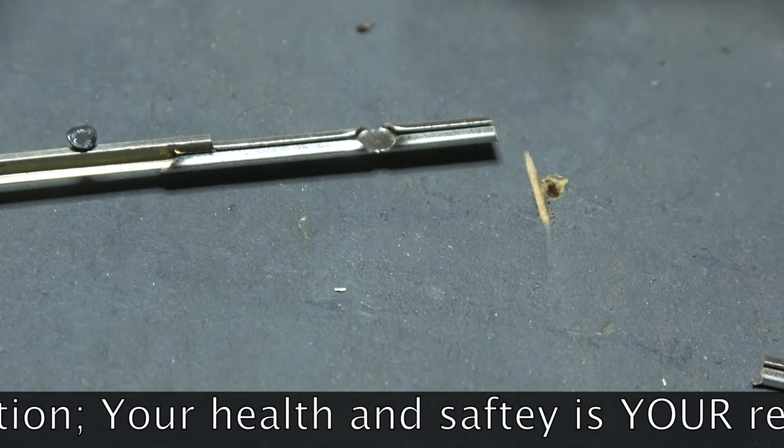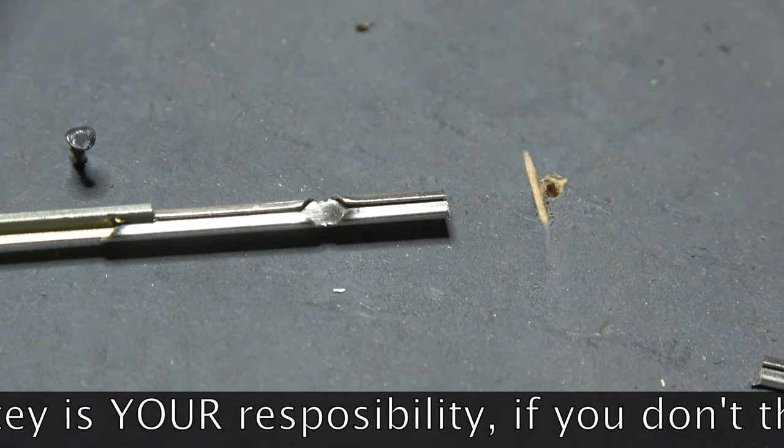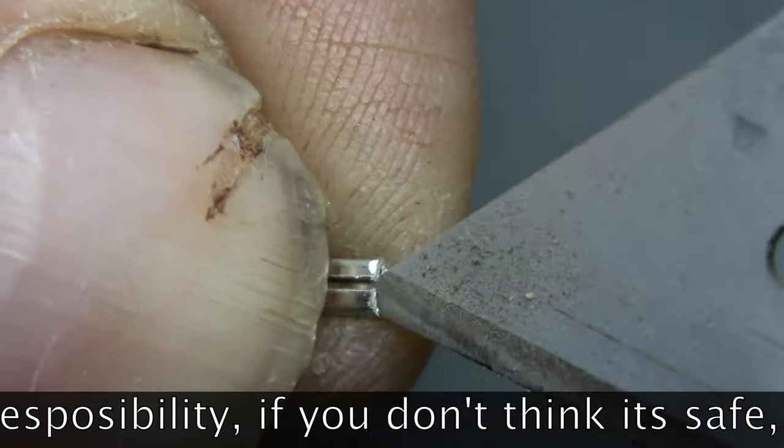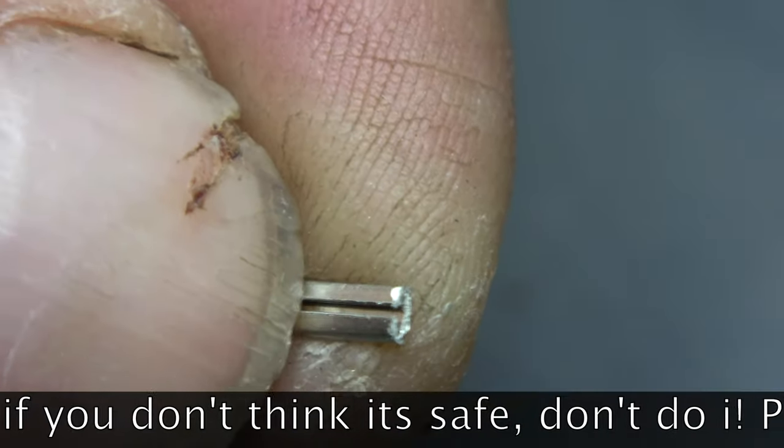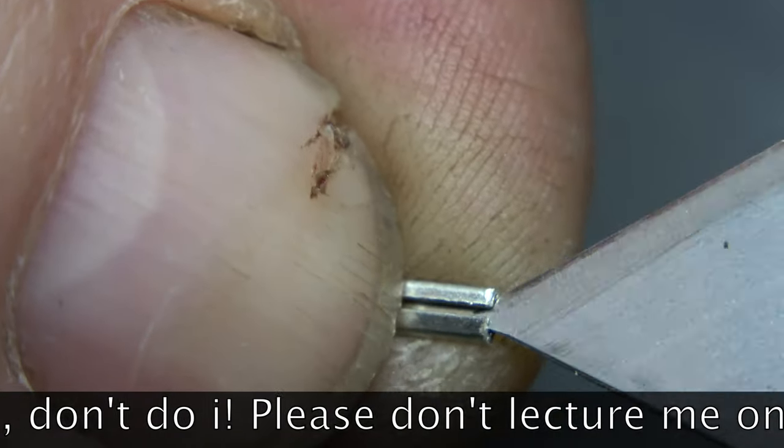Then with an implement of your choice, mine is a Stanley blade, I'm just going to prise the end that we've just cut so it opens up the gap just a little bit. That will make it easier to slide our 10 millimeter piece of rail into the rail joiner.